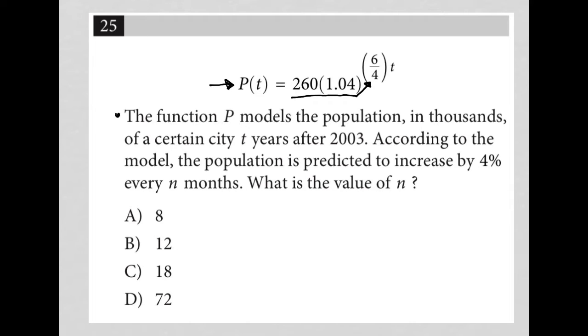The function P models the population in thousands of a certain city t years after 2003. So we know that t is years and it's years after the year 2003. According to the model, the population is predicted to increase by 4% every n months. That's interesting because there's no mention of n in the actual function itself. We have just t. So let's keep that in mind.